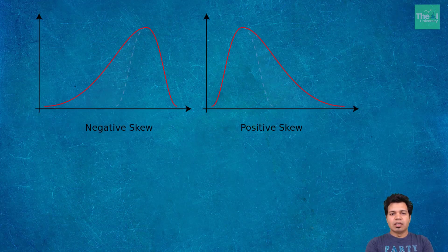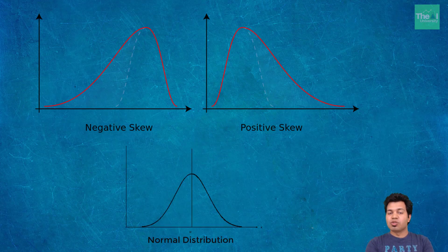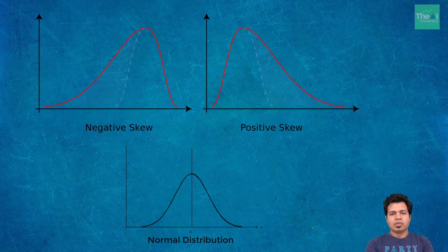A curve or dataset is negatively skewed when the long tail is on the left-hand side of the peak; in such data, the mean also stays on the left. A normal distribution is perfectly symmetrical with the mean exactly at the peak. For positive skewness, the long tail is on the right-hand side of the peak. I will show you how those curves look in a moment.